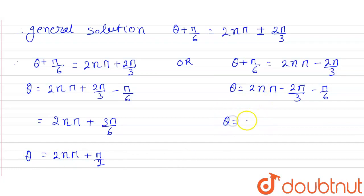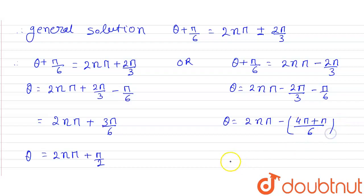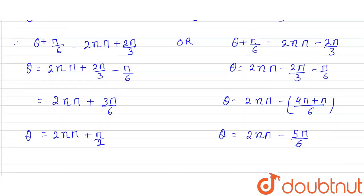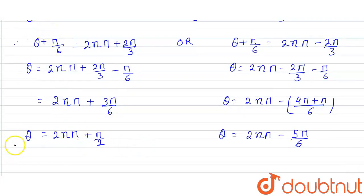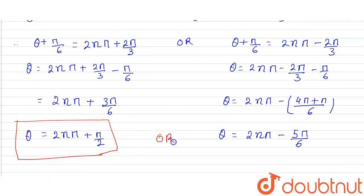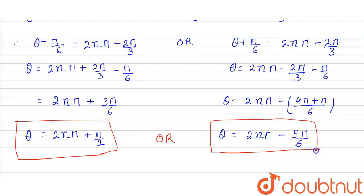And again, for the negative case: θ + π/6 equals to 2nπ minus 2π/3. So θ equals to 2nπ minus 2π/3 minus π/6, which equals to 2nπ minus 4π/6 minus π/6 equals to 2nπ minus 5π/6.